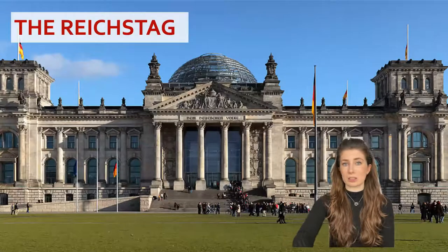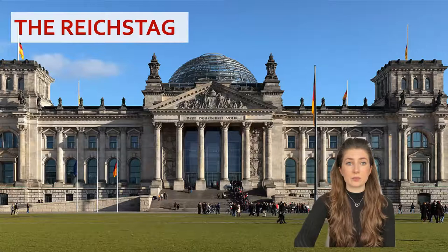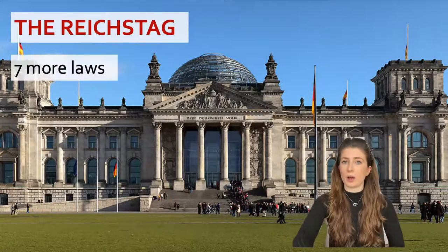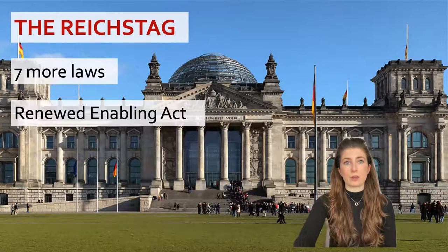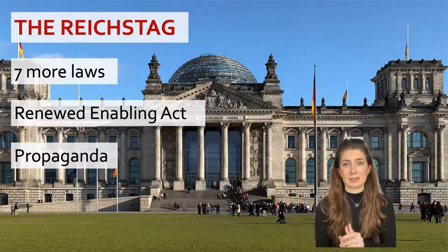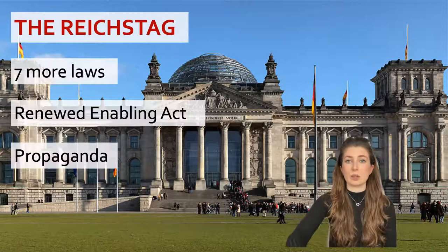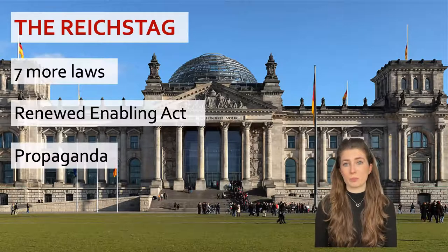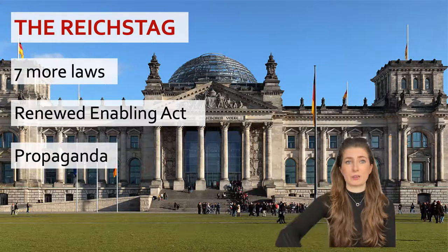Starting with the Reichstag: under the Enabling Act, the Reichstag had granted legislative powers to Hitler, and only seven more laws were ever passed through it. Every four years it renewed the Enabling Act, and in November 1933, a Nazi list of candidates was approved in a virtual plebiscite, designed to show the popularity of the regime. The Reichstag essentially became more of a platform for propaganda than anything legitimate — basically an applauding platform for Nazi speeches.